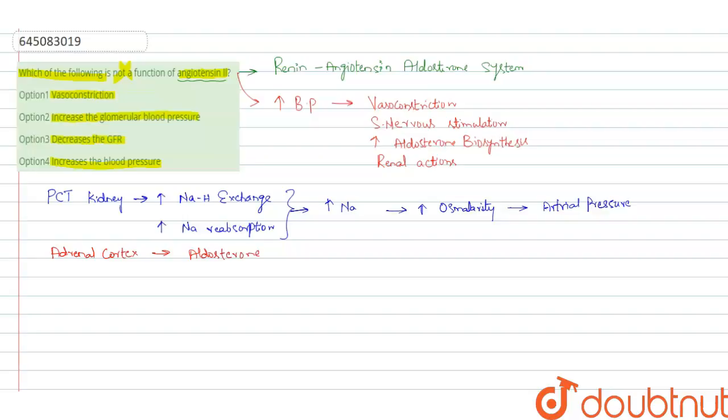Aldosterone is the steroid hormone that causes an increase in the sodium reabsorption and potassium excretion at the distal tubule and collecting duct of the nephron.